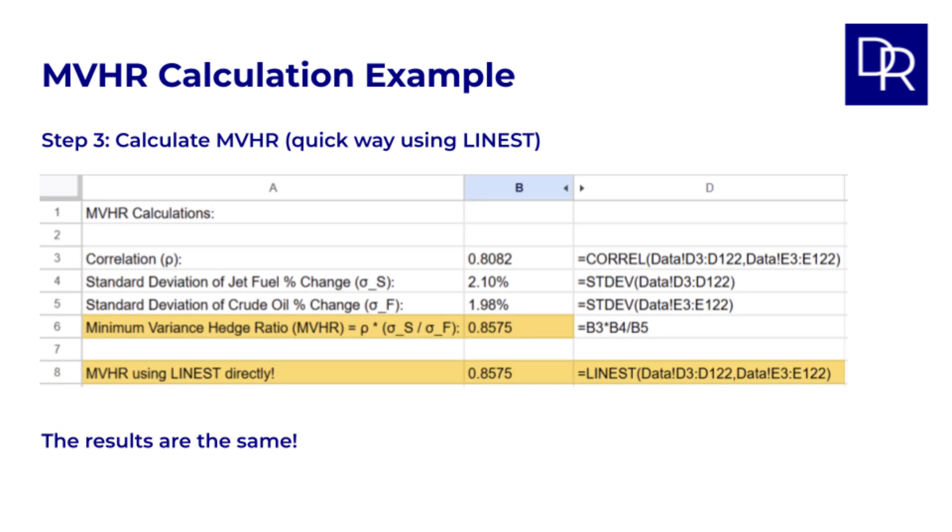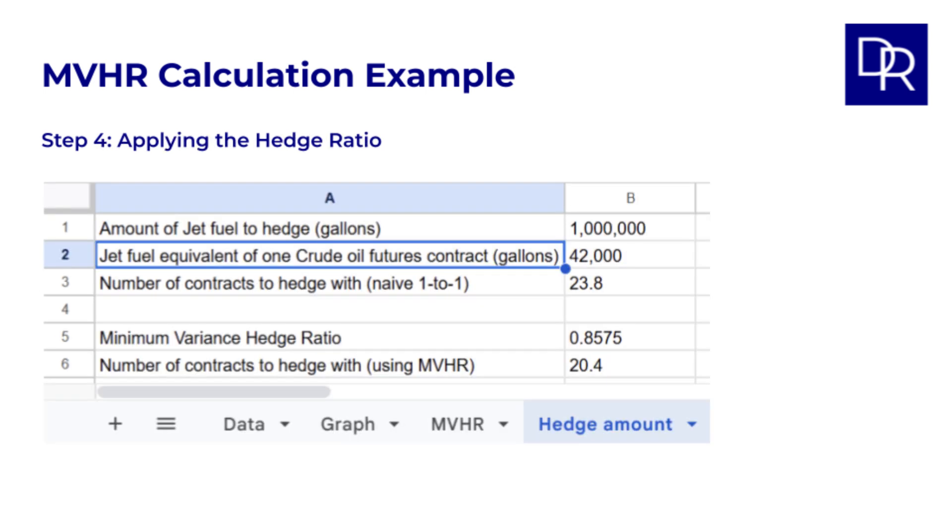As I mentioned, this is a long way. We saw earlier that in the linear regression, the value for beta is actually the MVHR. So, to show that this does indeed give the exact same result, we can use the linest function on the percentage changes to get the MVHR in one step. The value is identical, which shows the two methods give the same result. So, you can just use linest directly in Google Sheets or Excel. There's no need to calculate the rho and sigmas, though it does help with intuition, I think. Then finally, step 4, applying the hedge ratio.